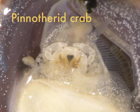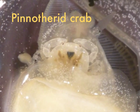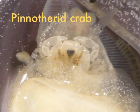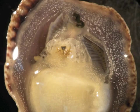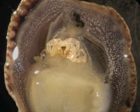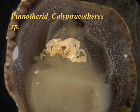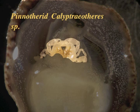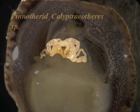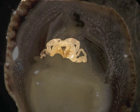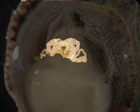A Pinotherid crab has parasitized this snail. This Pinotherid calypterotherus commonly occurs in the brood space of many of the calypterid snails in our lab. While the crab is underneath the shell, it lives off the same food the snail filters from the water. This may weaken the snail host, but does not necessarily kill it.